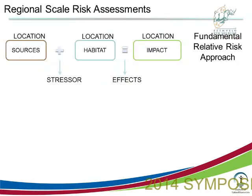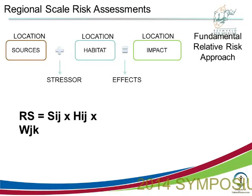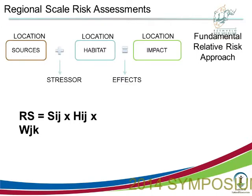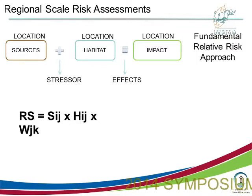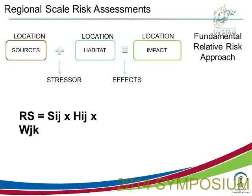There are all these things we need to consider, and that's really what brought about the regional scale risk assessment approach, which Wayne Landis developed. It considers the location of multiple sources, multiple stressors, and how they impact on multiple receptors — we refer to that as the habitat, the place where those receptors respond. It's going to cause an impact: loss of biodiversity, loss of viable community or population states, and loss of subsistence fisheries. Those are our endpoints.